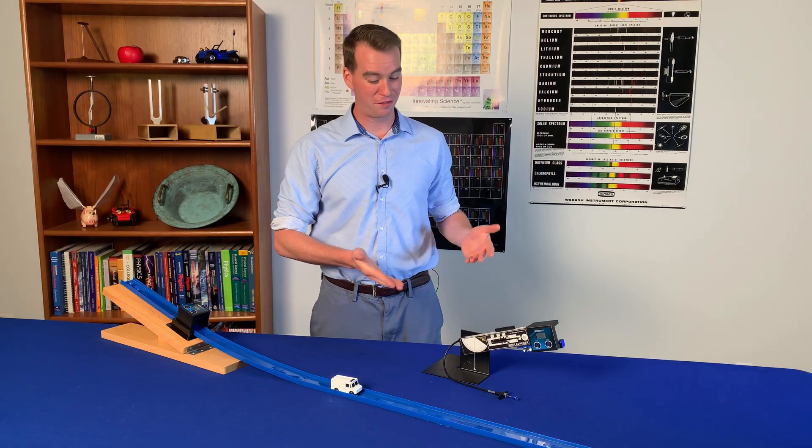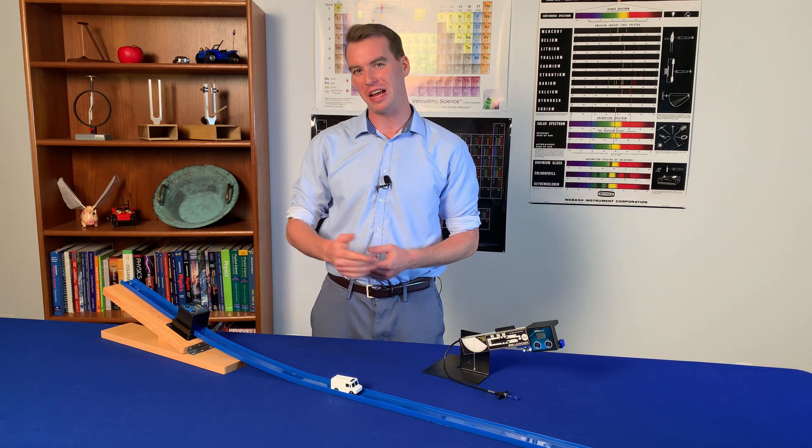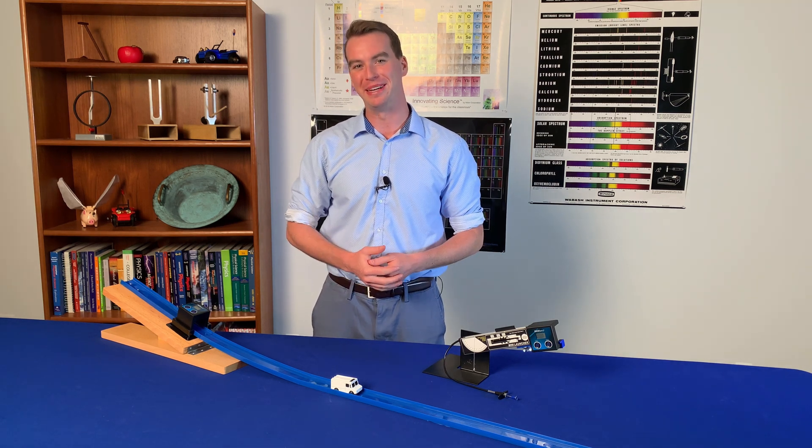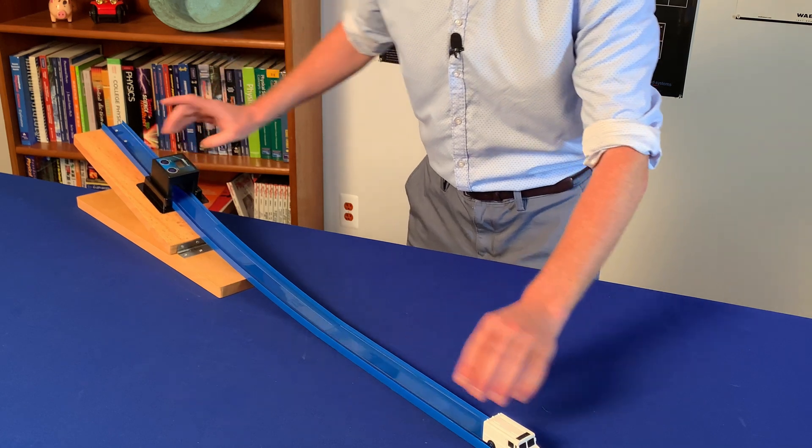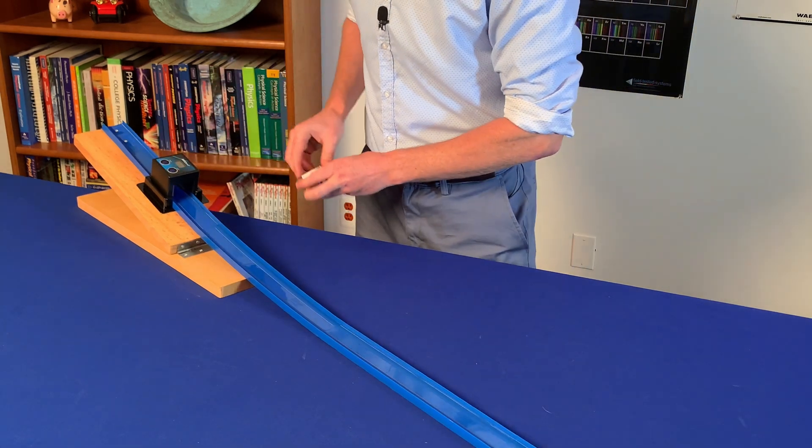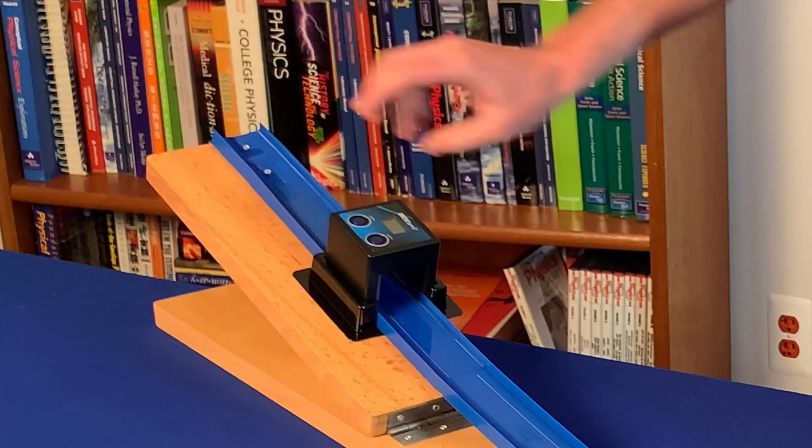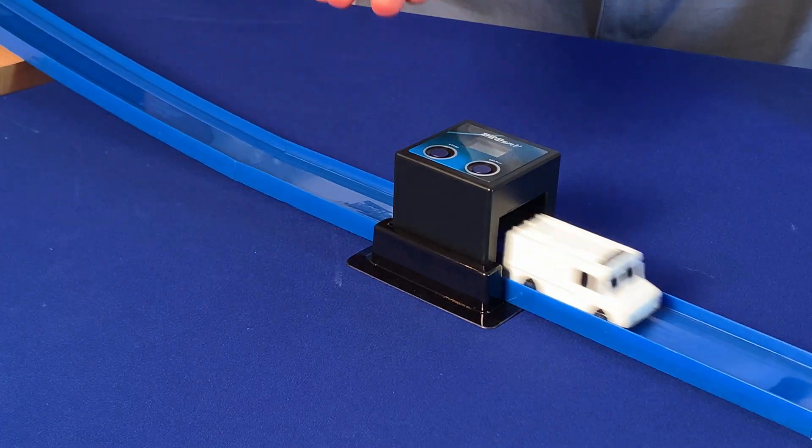So now let me show you how versatile and creative you can get with your classroom experiments by using the BSP. In this experiment we'll measure the transformation of potential to kinetic energy by moving the BSP to different distances and heights on this track so we can get some different data points.